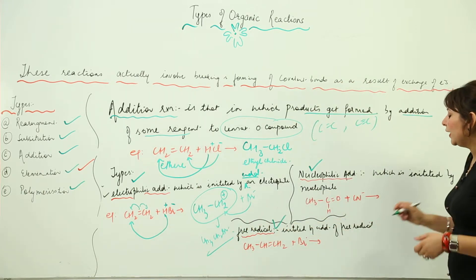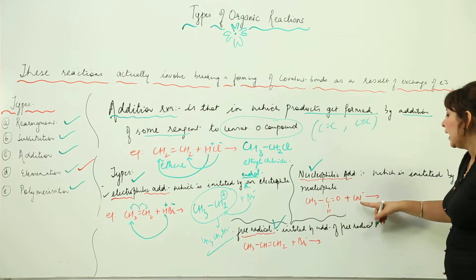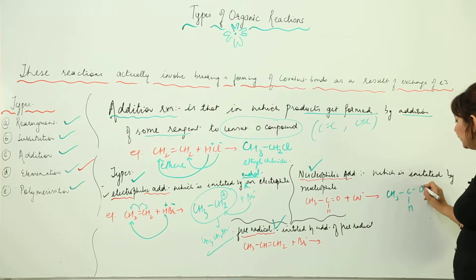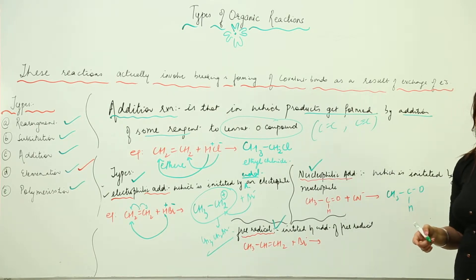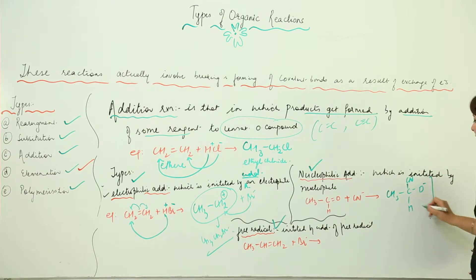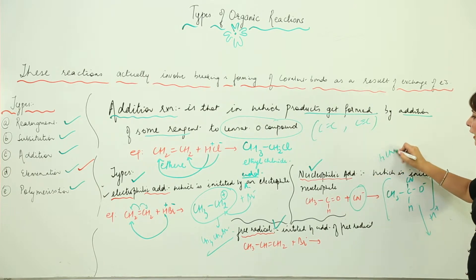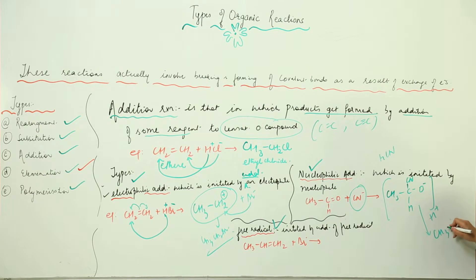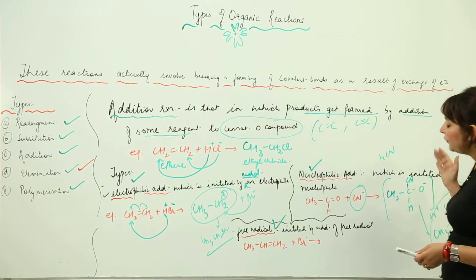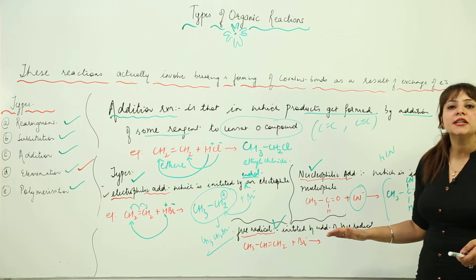Next we have nucleophilic addition. I have acetaldehyde and I am going to add a cyanide to it. The C=O double bond becomes a single bond because addition occurs only when there is an extra bond, and a new bond forms where cyanide attaches. As a result, O gets a negative charge. In the second step we add H+ because CN was actually HCN, forming CH3C(CN)(OH) — this is acetaldehyde cyanohydrate.